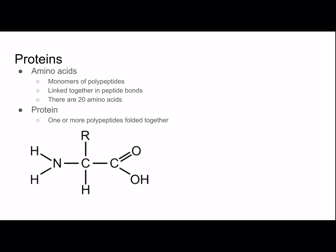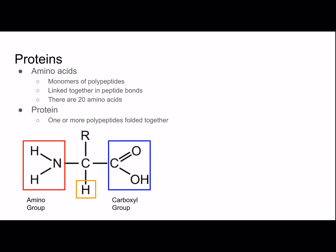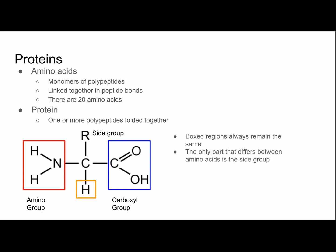This is an amino acid. On one side we have an amino group (NH₂), a hydrogen atom, and a carboxyl group. The R is the side group. The boxed regions — the amino group, hydrogen atom, and carboxyl group — are the same on every single one of the 20 amino acids. The only part that differs is the side group, that R. There are 20 different side groups, and they can be polar, nonpolar, or charged. This will be really important as we'll see in the next slide.